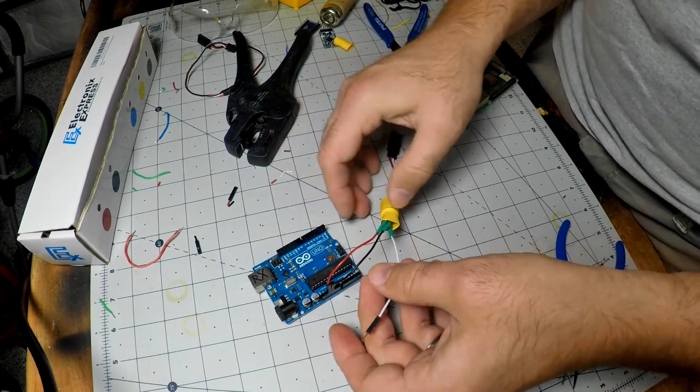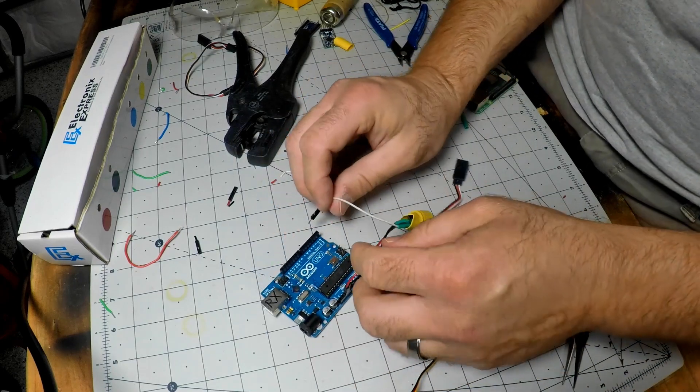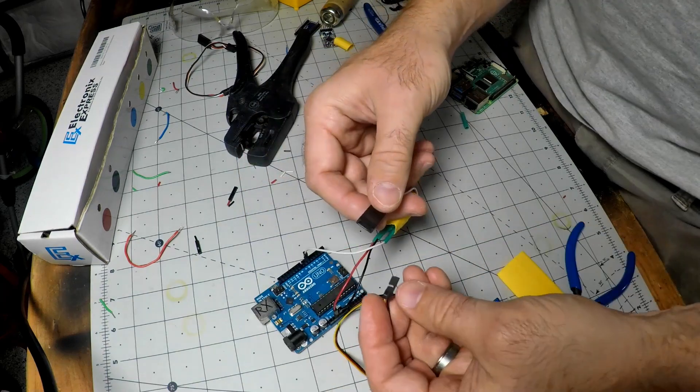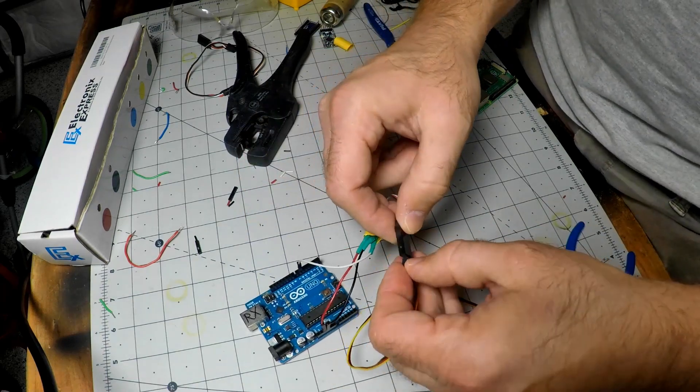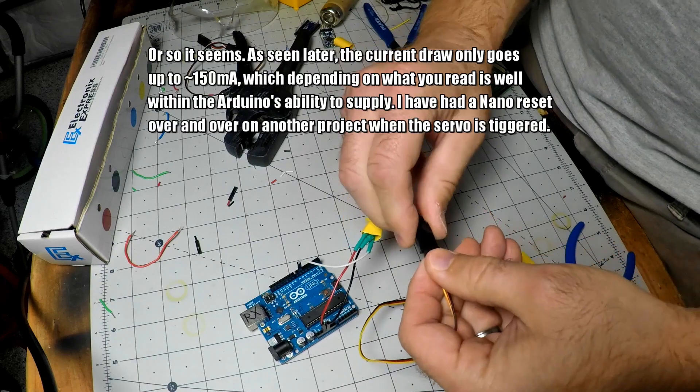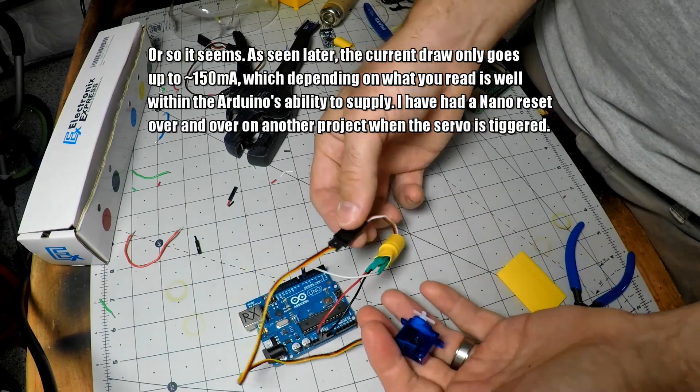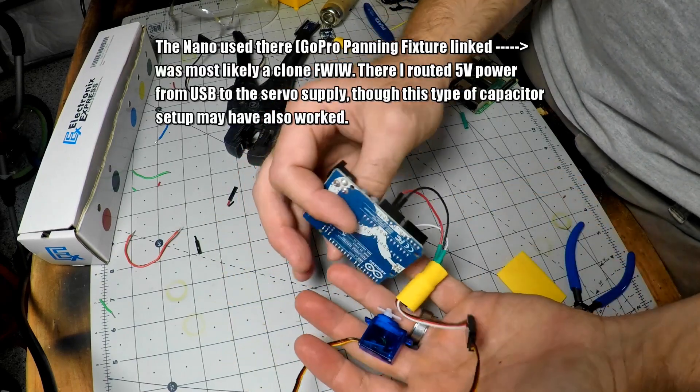There's the power. And the capacitor is used to kind of even out the pulses that you need for the servos. You know, when they're starting up, they just need quite a bit of power. So that keeps it from just having a big current draw to begin with.